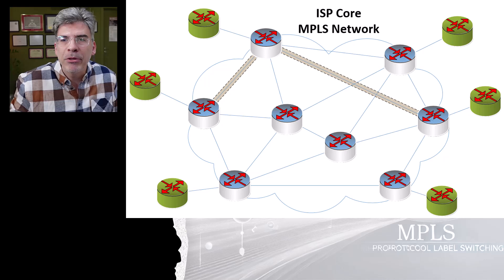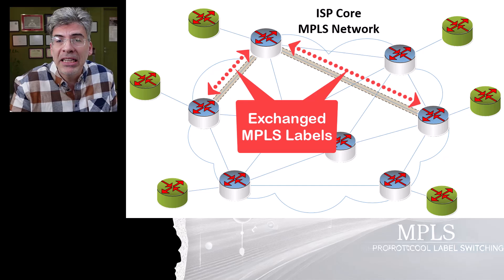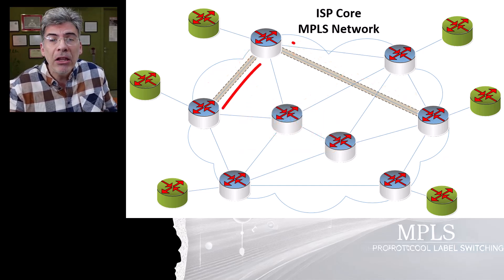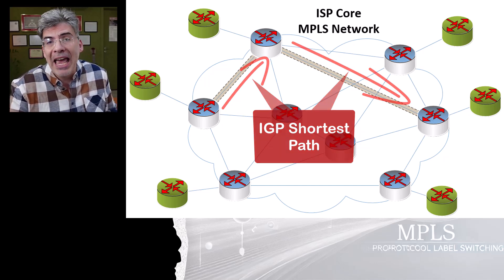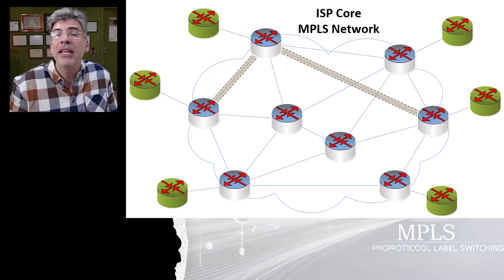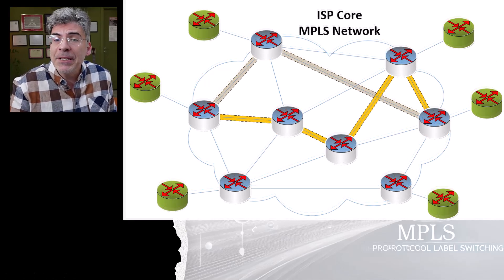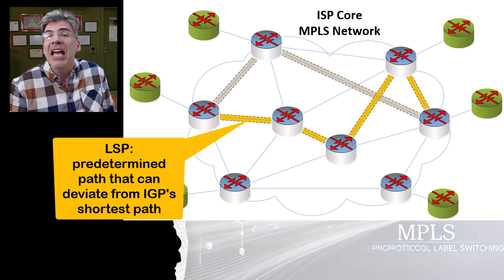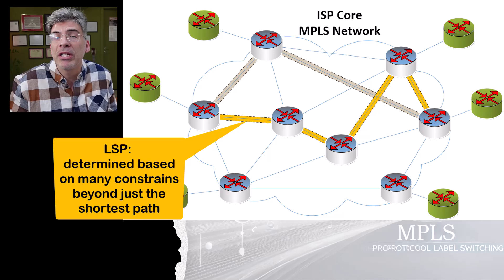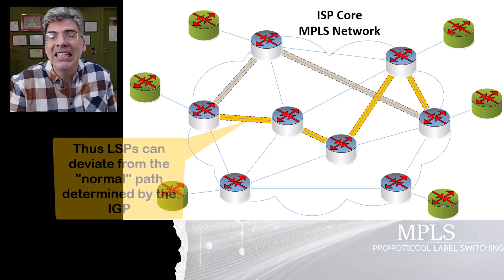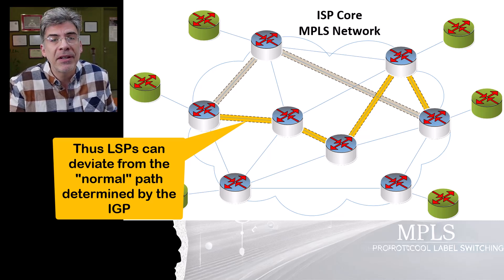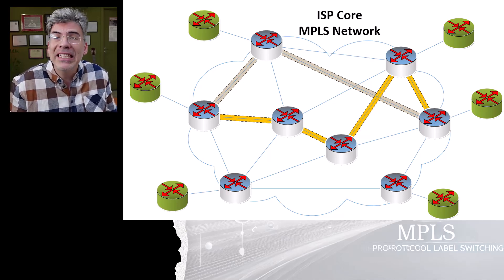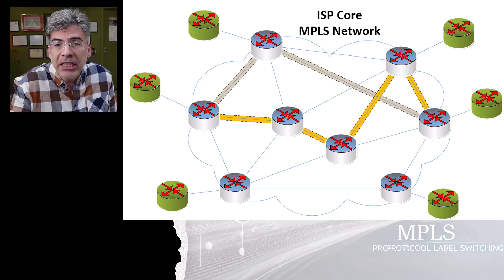LSPs differ from regular MPLS label swapping paths. Regular paths are established based on exchanged MPLS labels, which in turn are determined based on the shortest path algorithms used by the underlay IGP configured on the MPLS infrastructure. Regular MPLS paths simply use the shortest path determined by the underlying IGP without any additional capabilities of deviating from that path. LSPs, on the contrary, are predetermined paths that can deviate from these shortest metric paths and are created and assigned based on many additional constraints beyond simply the shortest path.